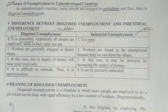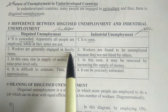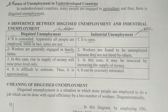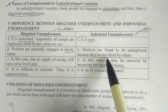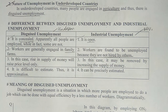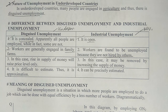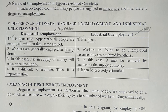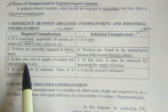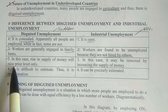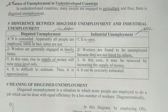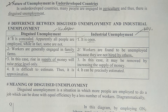A second difference: in disguised unemployment, workers are generally engaged in family farms — more people are working on family farms than needed. In industrial unemployment, workers are found unemployed because they are not hired by others. A third difference: in disguised unemployment, a rise in money supply will only raise the price level, because demand will rise but supply will not increase, so prices increase.